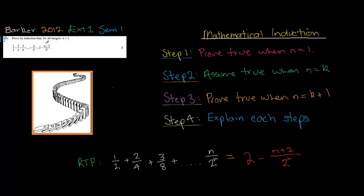We're given a statement like this — so this is the one we're going to do. It's a half plus 2 on 4, plus 3 on 8, plus all the way up to this. You can tell that the numerators are going up by 1, 2, 3, 4, 5, all the way up to n on the top, and the denominators are 2 to the power of n. We've got to prove that this left-hand side equals 2 minus (n+2) all over 2 to the power of n.